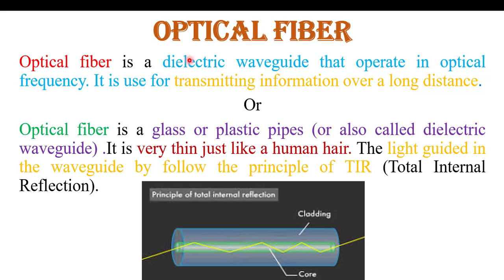I have already given the introduction of optical fiber and optical fiber communication system block diagram description in my previous video. Optical fiber is a dielectric waveguide that operates in optical frequency and it is used for transmitting any kind of information — voice, video, data — over a long distance. It is called a dielectric waveguide because optical fiber is a pipe made up of glass or plastic, and the air inside the pipe acts like a dielectric. It is very thin, just like a human hair, and information is transmitted in the form of light, following the principle of total internal reflection.